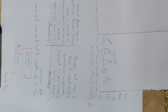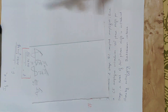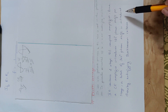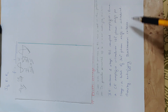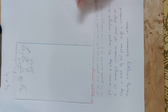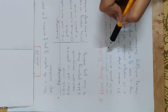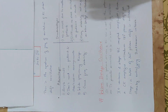Now we consider the Barkhausen criteria. The Barkhausen criteria requires that the total phase shift of the circuit — angle A-beta — must be 0 degrees or 360 degrees. Using two common emitter amplifiers introduces a total of 360 degrees phase shift. At that point, the Barkhausen criteria is satisfied and the circuit will oscillate.